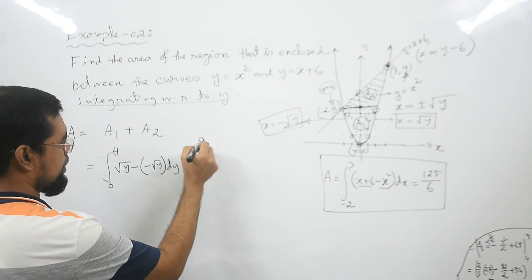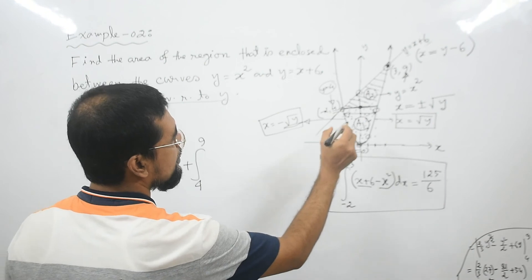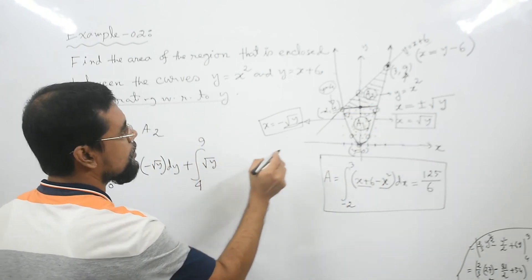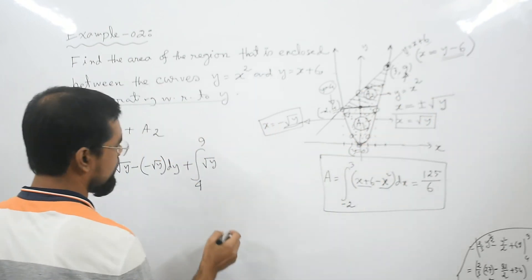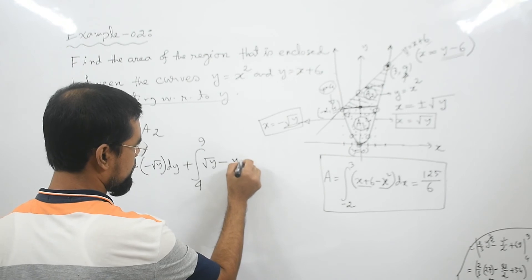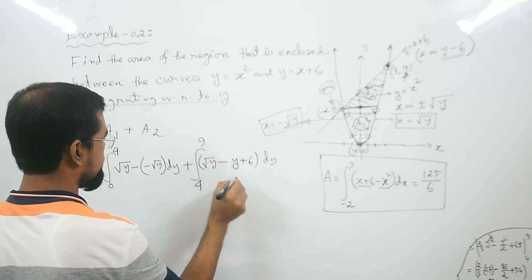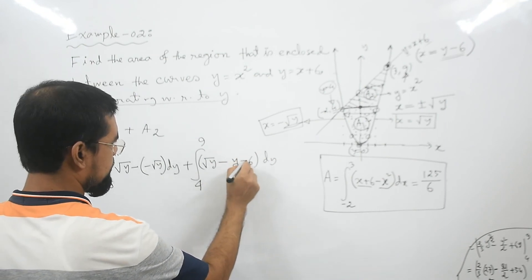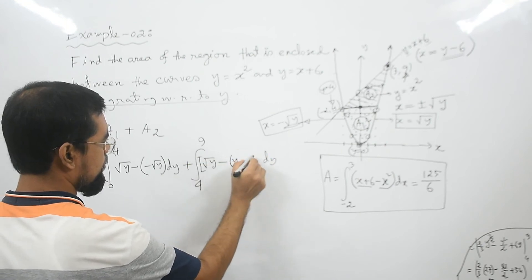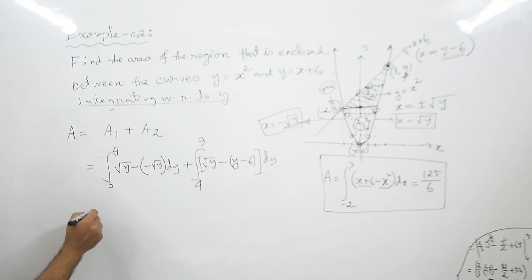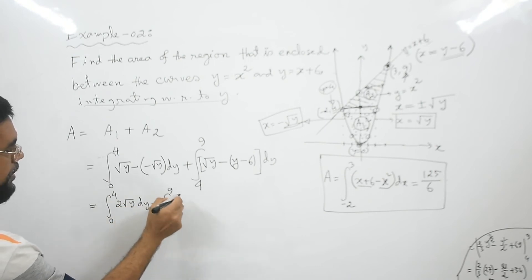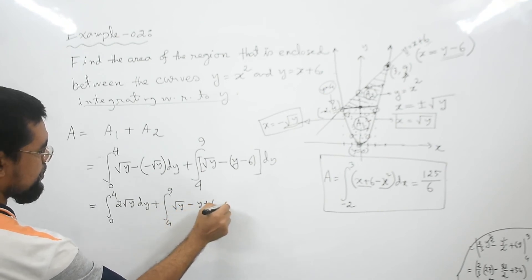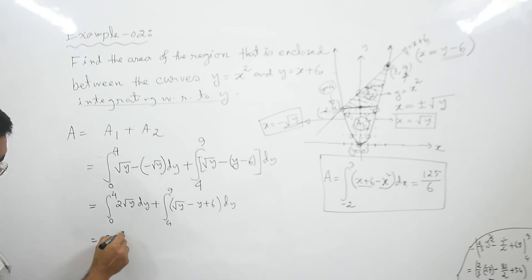For region A2, y goes from 4 to 9, so the lower limit is 4 and the upper limit is 9. The curve on the right is still x equals root y; moving right gives root y and moving left gives the straight line x equals y minus 6. So the integrand for A2 is root y minus (y minus 6), which equals root y minus y plus 6, integrated with respect to y.